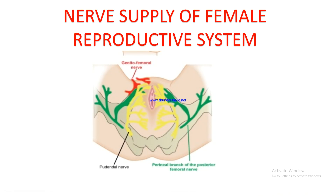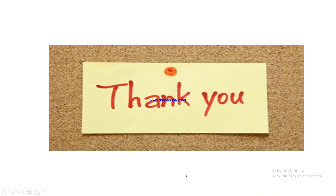The nerve supply of the female reproductive organs includes the genitofemoral nerve and the pudendal nerve, with the perineal branch of the posterior femoral cutaneous nerve also being a main contributor. Thank you.